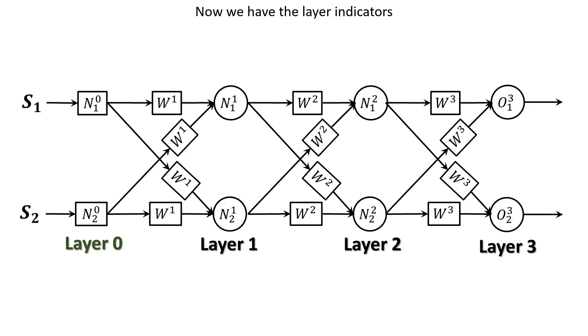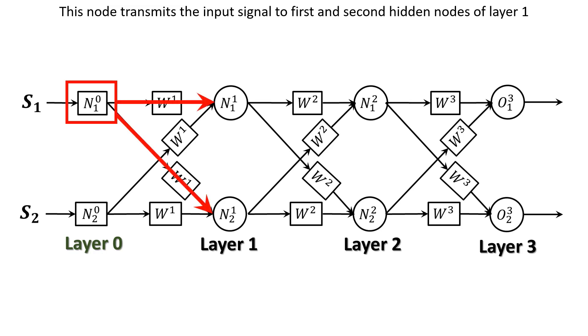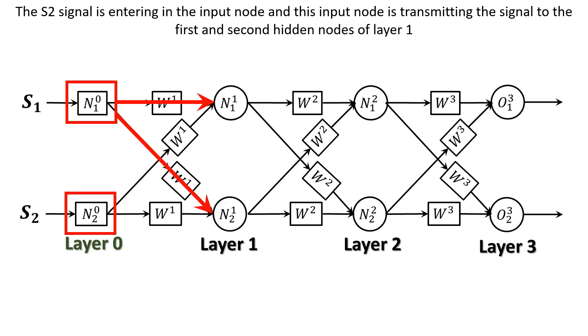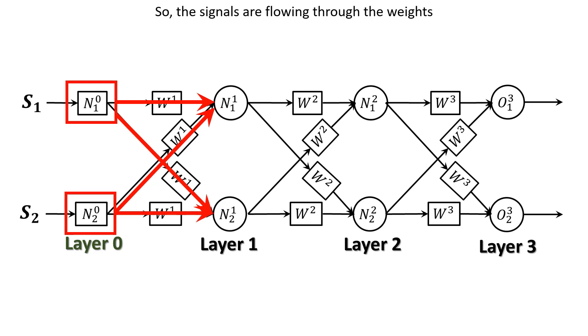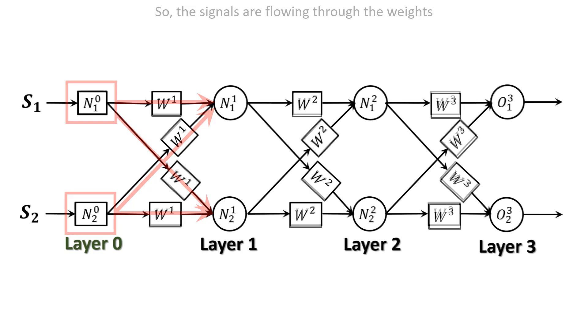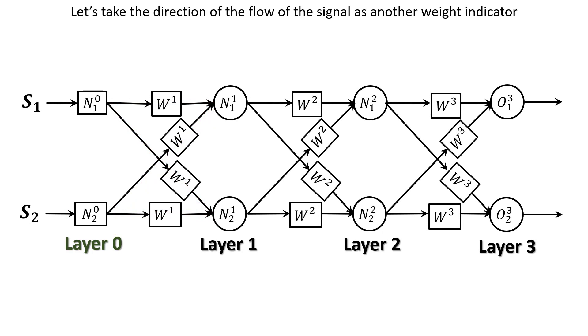Now we have the layer indicators. If we look at layer 1 only, there are 4 weights. And all 4 of them look the same. So we need something else to mark these weights uniquely. Here, in the first input node, the S1 signal is entering. This node transmits the input signal to first and second hidden nodes of layer 1. Similar thing is happening here on second input node. The S2 signal is entering in the input node. And this input node is transmitting the signal to the first and second hidden nodes of layer 1. So, the signals are flowing through the weights.